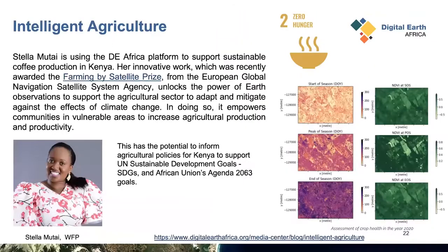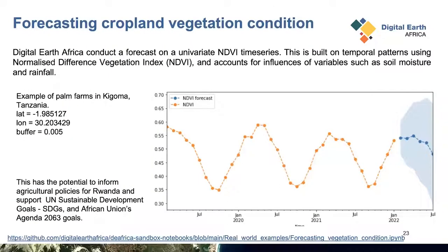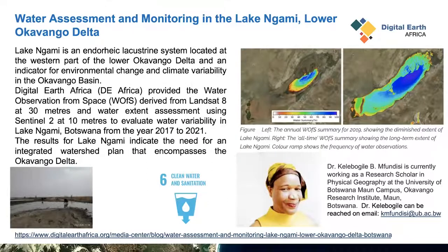One use case is by Stella on coffee production in central Kenya, where she submitted this for the Farming by Satellite prize pitch and documented changes including the start and end of season — possible using Digital Earth Africa. We're also looking at crop land vegetation condition, for example palm farms in Kigoma, Tanzania, where colleagues from the National Bureau of Statistics including Martha have been able to use the tool to show changes and compare with NDVI.